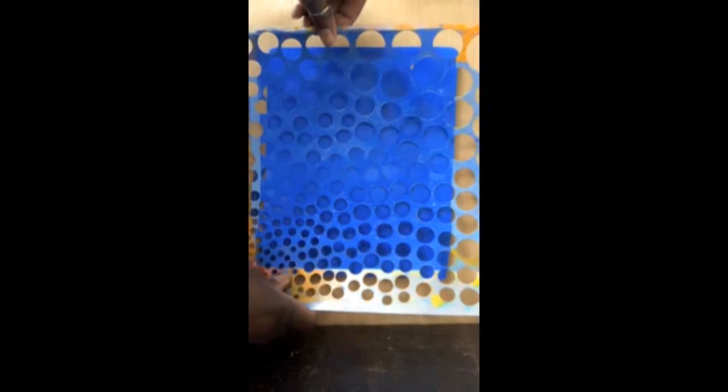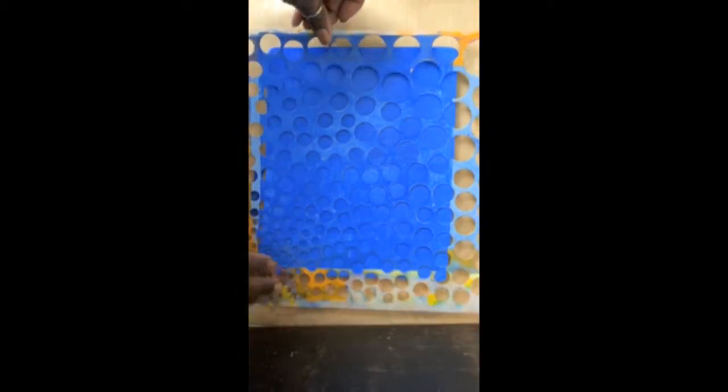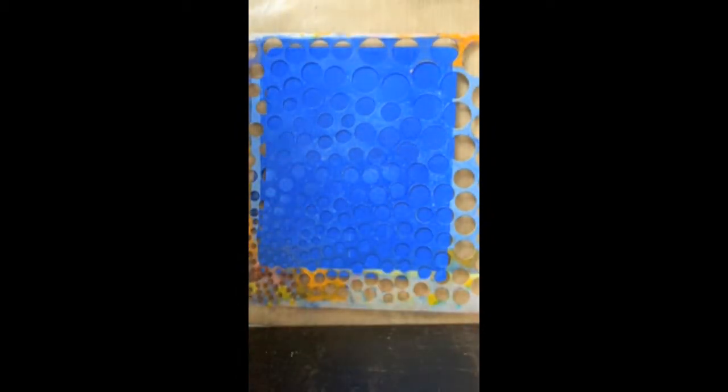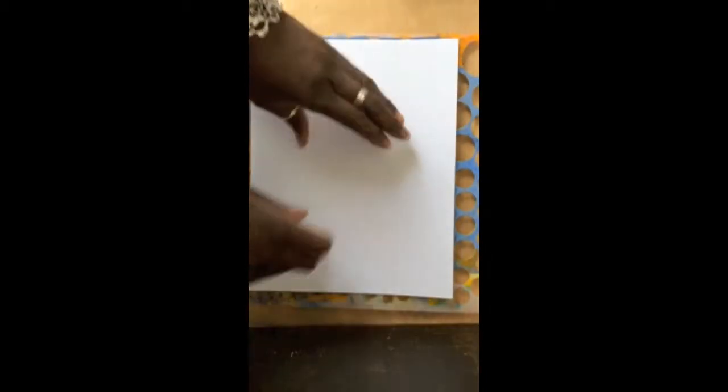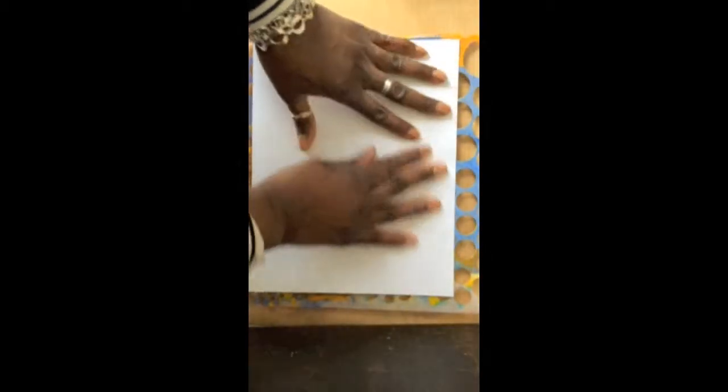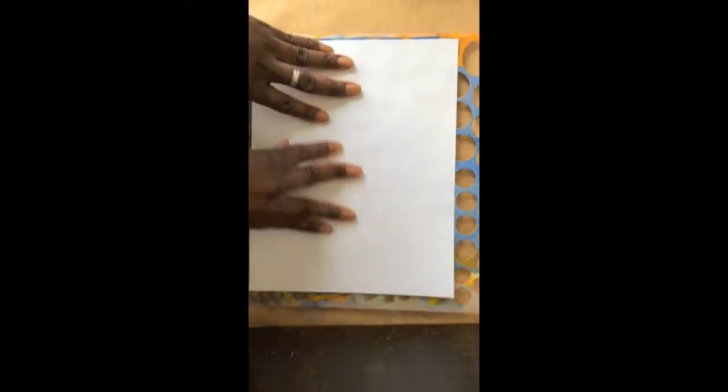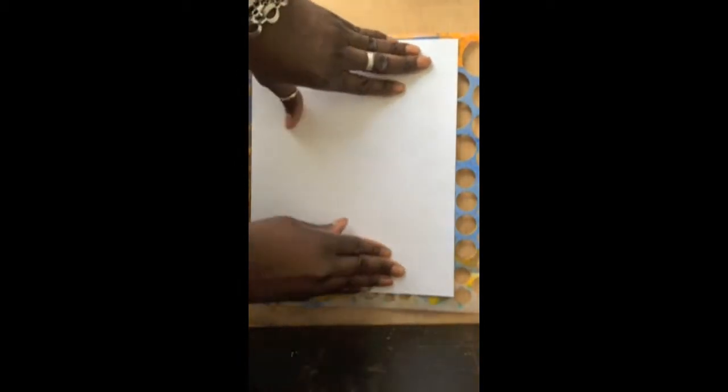After that's mixed, we take our stencil, put it right onto the jelly plate. Take our paper, put it on top of the stencil, and use our hands to press the paint into the paper.